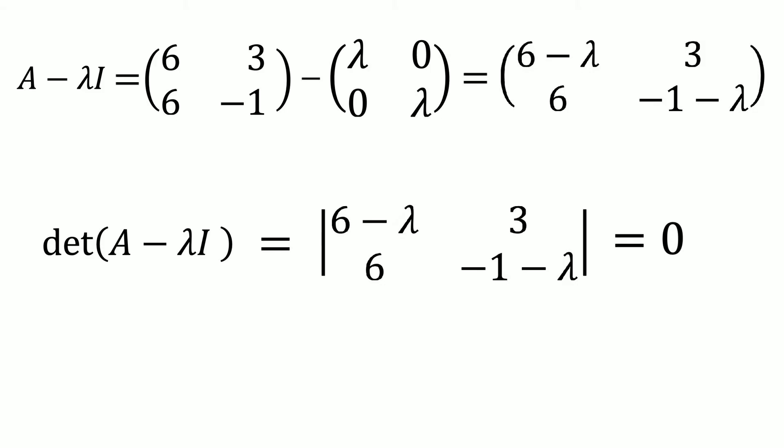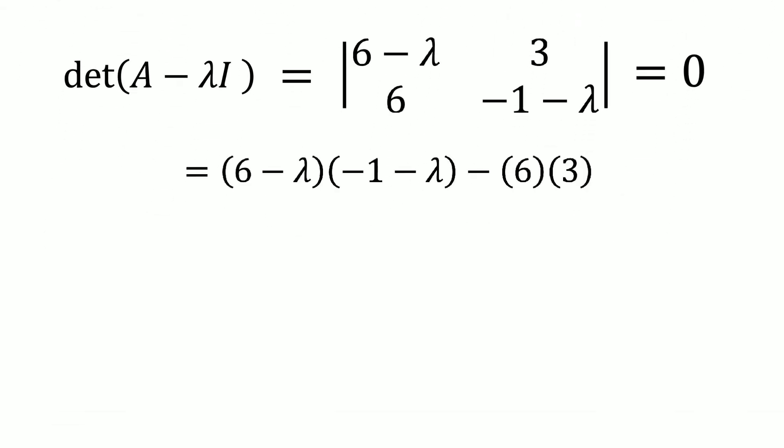As you already know, we can calculate the determinant of a 2 by 2 matrix by multiplying the entries on the main diagonal and subtracting the multiplication of the entries on the off diagonal. In this case, we get 6 minus lambda times minus 1 minus lambda, minus 6 times 3. This has to equal 0.